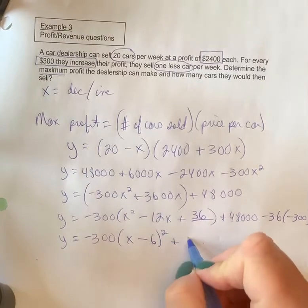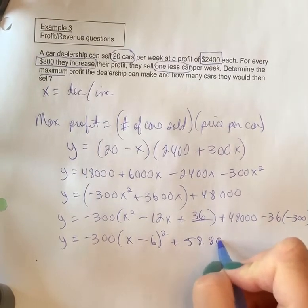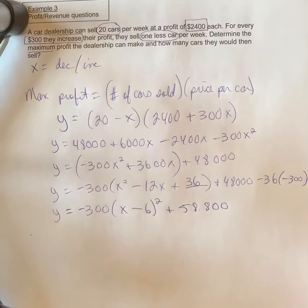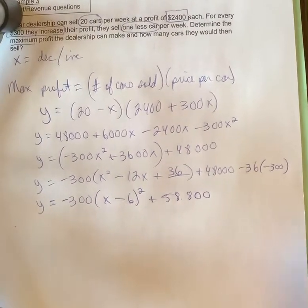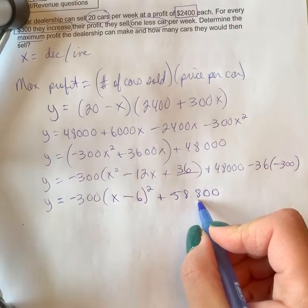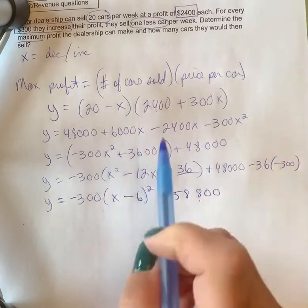So when you simplify that, sorry I'm moving the camera around here a little bit, 58,800, there we go. Okay, there we go. So what do all these represent? Okay, the y value is going to represent the max profit, the x value is the x value in these equations right here.